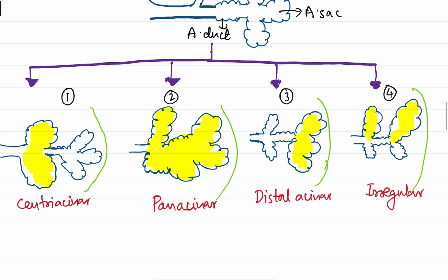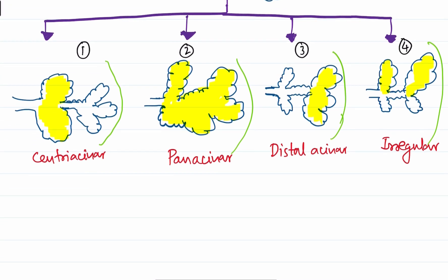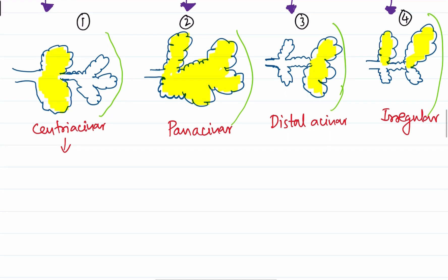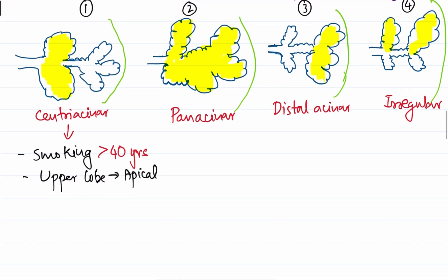Centriacinar emphysema is strongly associated with smoking — the leading cause of COPD, typically with chronic smoking greater than 40 years. It usually involves the upper lobe, specifically the apical part. Around 95% of clinically significant emphysema cases are centriacinar.